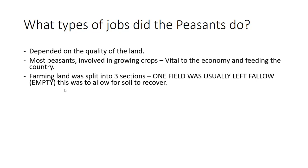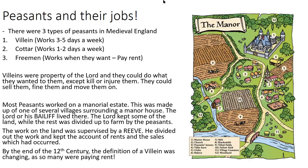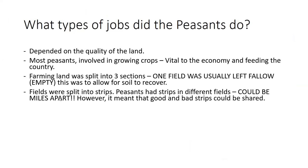Farming land was split into three sections. One field was usually left fallow — empty — to allow the soil to recover. What happens is it's one big piece of land split into strips. Each peasant would be given strips of land across the different fields, not all in the same area. Some land was better than others, so the fields were split into strips and peasants had strips in different fields — they could be miles apart. This could be quite difficult, but the positive is that good and bad strips could be shared out equally.